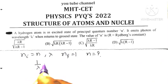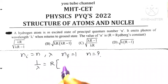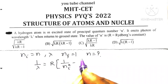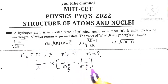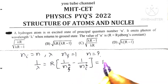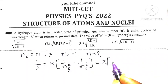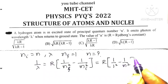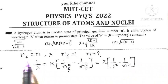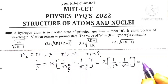We know the wave number of the photon emitted is: 1 upon lambda is equal to R in bracket (1 upon nf squared minus 1 upon ni squared), which equals R in bracket (1 upon 1 squared minus 1 upon n squared), because nf is 1 and ni is n.